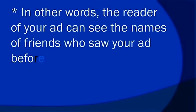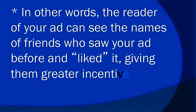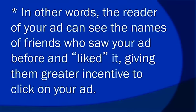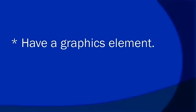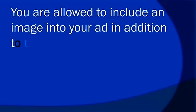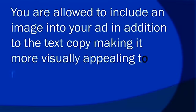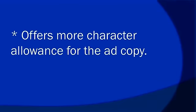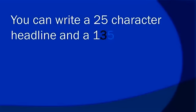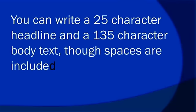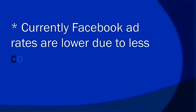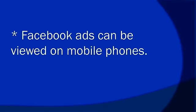Facebook ads have social proof. In other words, the reader of your ad can see the names of friends who saw your ad before and liked it, giving them greater incentive to click on your ad. They also have a graphics element — you're allowed to include an image in addition to the text copy, making it more visually appealing to readers. Facebook offers more character allowance: a 25-character headline and a 135-character body text, though spaces are included. Currently, Facebook ad rates are lower due to less competition, and Facebook ads can be viewed on mobile phones.